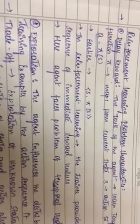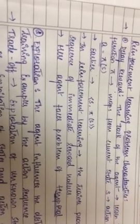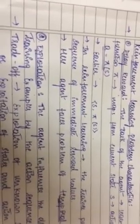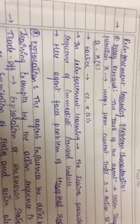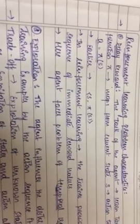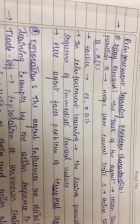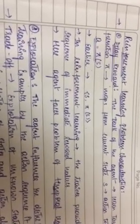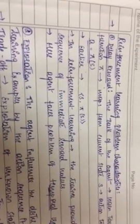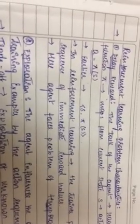In reinforcement learning, training information is not available to the machine. Instead, the trainer provides only a sequence of immediate reward values. A reward is the outcome of the action performed by an agent depending upon the state in the environment. For example, if a game is won with +100 points, the plus sign is the reward and 100 is the reward value.